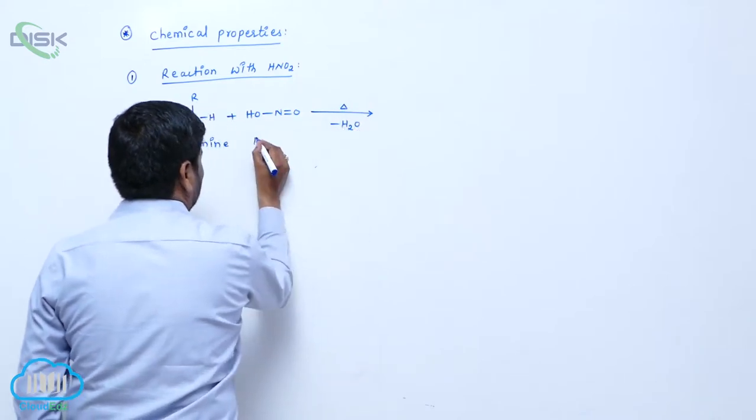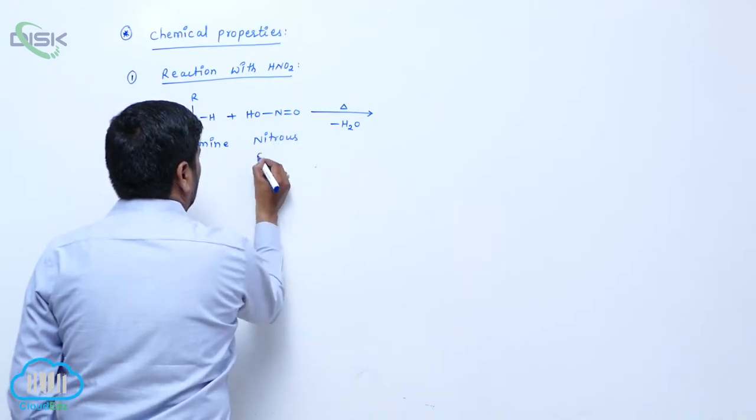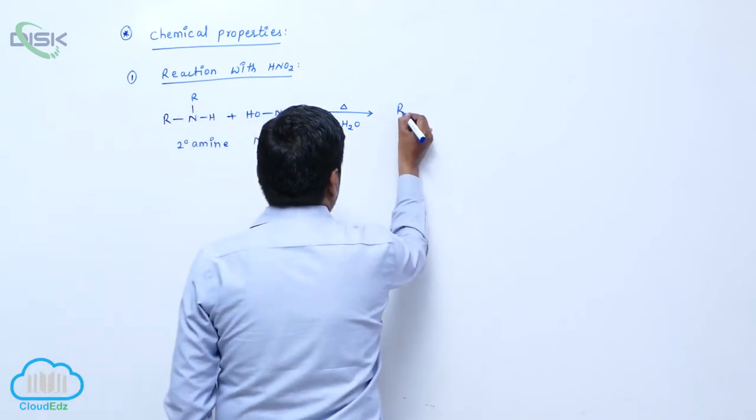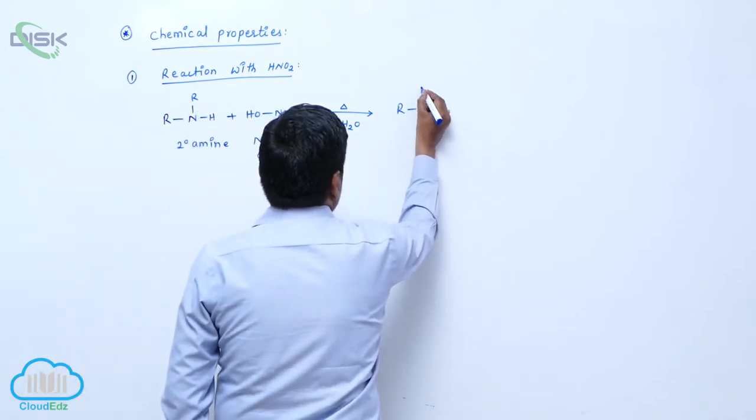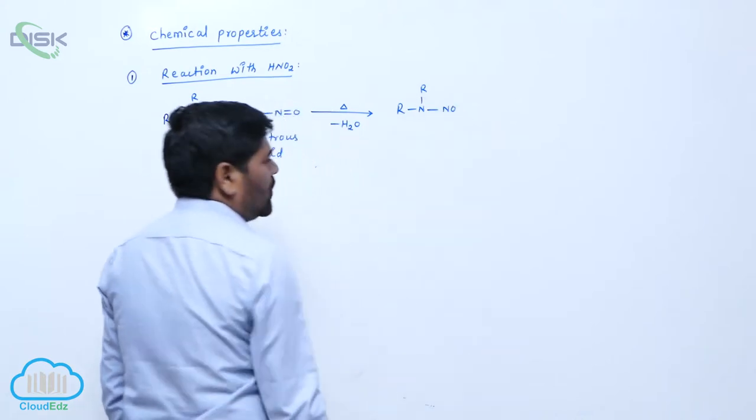This is nitrous acid. Then here is R, nitrogen, then it converts into N-nitrosoamide.